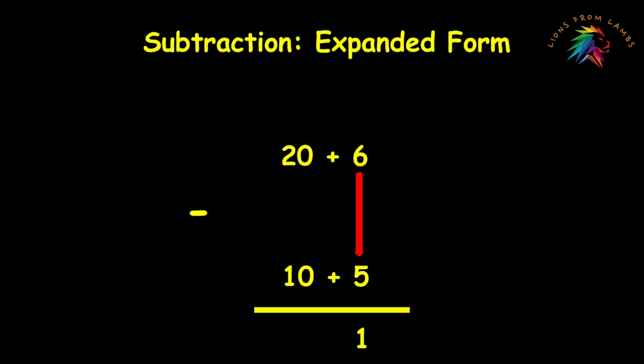Now we move to the tens. 20 minus 10 equals 10. Now this number is still expanded, so now we just condense it. 10 plus 1 equals 11. Same answer.